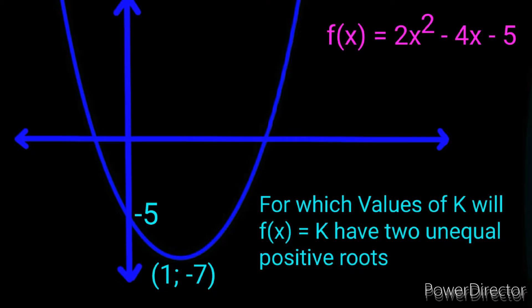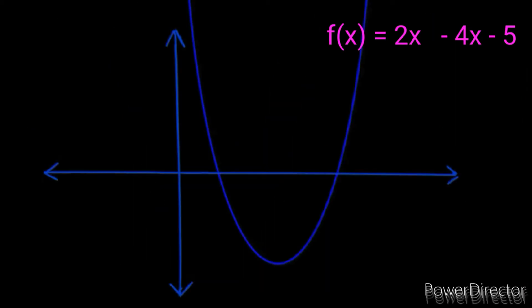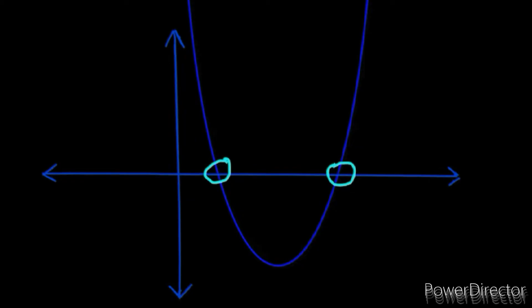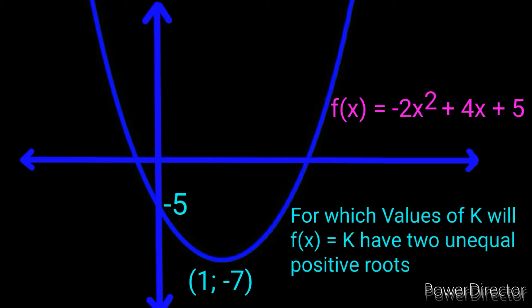Here is the next level. We're given the equation of f with a y-intercept of -5 and a turning point of (1, -7). We're asked: for which values of k will f(x) = k have two unequal positive roots? Let me show you an understanding of two unequal positive roots. This particular graph has two unequal positive roots — your roots are your x-intercepts, so there are two unequal roots, and both x-values are positive.